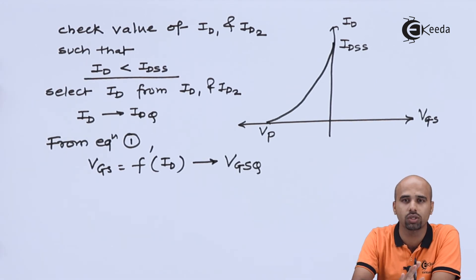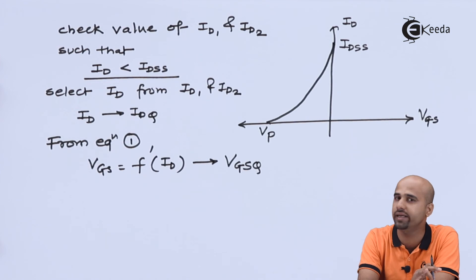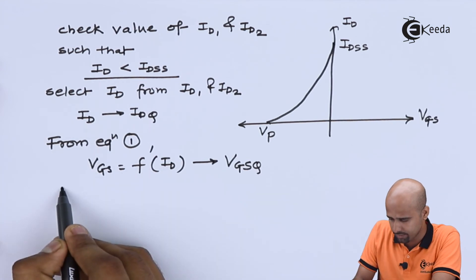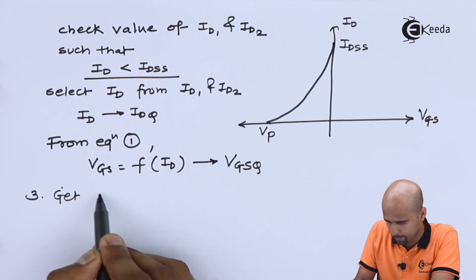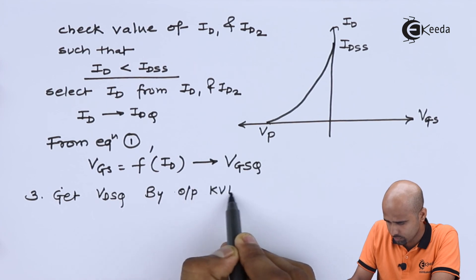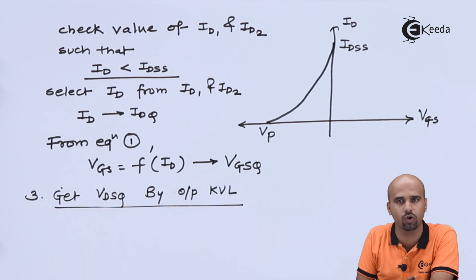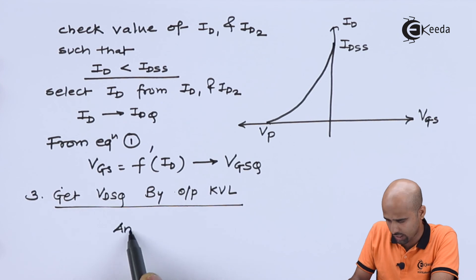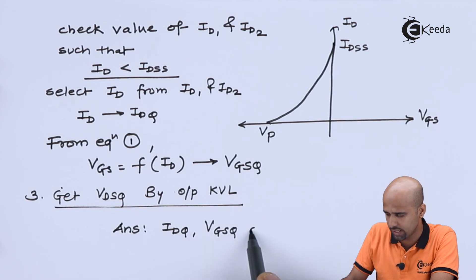Very simple, straightforward for any kind of DC numerical for FET. So these three answers if you follow this steps. These are the three Q point parameters you will get.